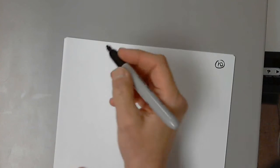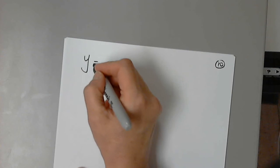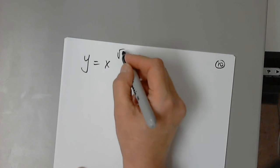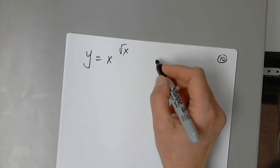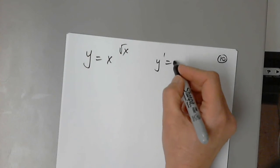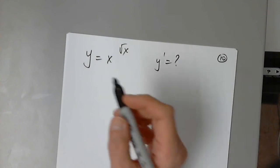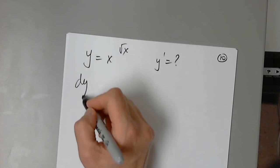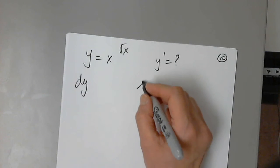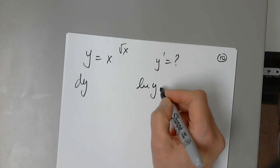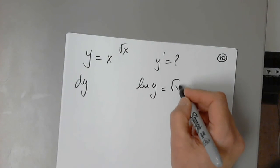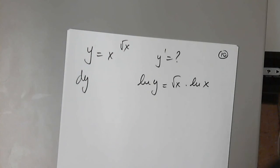So y equals x raised to the square of x, and we're asked to find y prime. We have to apply log first. Natural log y equals the square of x times natural log x.